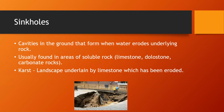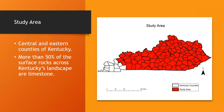We have the largest cave in the world, Mammoth Cave, and various others all over. This is my study area — it contains the central and eastern counties of Kentucky. More than 40 to 50 percent of the surface rocks of Kentucky's landscape are limestone. I chose this study area because the soil data I used for my susceptibility map was bounded to these areas; the far west didn't have any data.